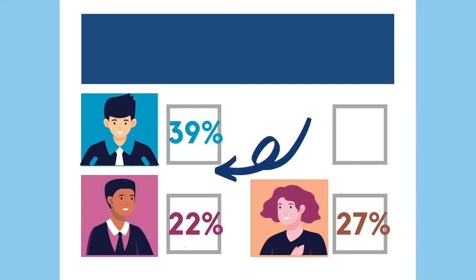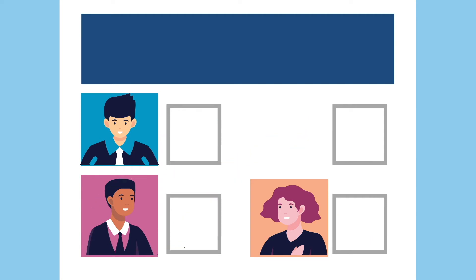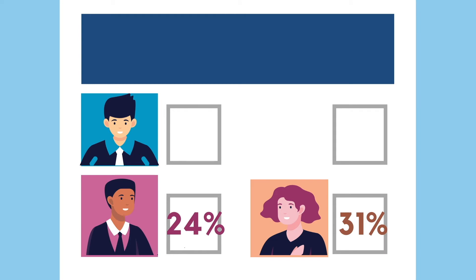The new numbers turn into this: Denise is now at 31% of the votes, Brian at 24% of the vote, and Alex pulling away at 45% of the vote.